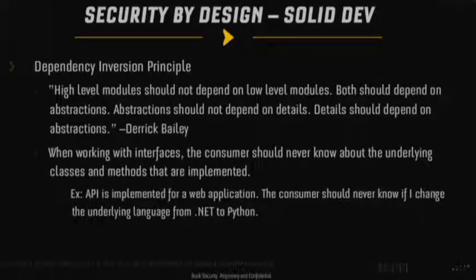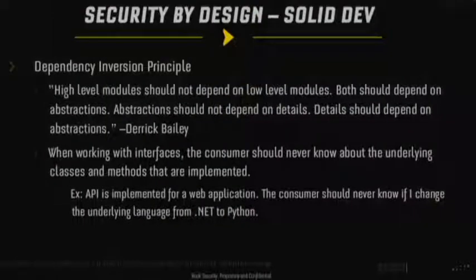Dependency inversion: high-level modules should not depend on lower-level modules — both should depend on abstractions. Abstractions should not depend on details; details should depend on abstractions. To correctly bind your system together, it's important to depend on the higher-level abstractions, not the other way around. This has to do with coupling — how tightly coupled your system is. Example: if you have an API implemented for a web application, the consumer shouldn't know if you change it entirely from .NET to Python. As long as the consumer receives the same data structure, it shouldn't matter to them.